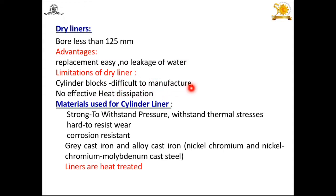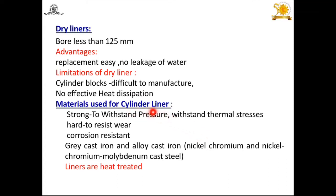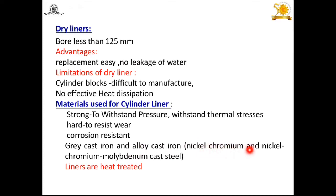The material used for cylinder liners must withstand high pressure and thermal stresses due to the high temperatures inside the cylinder. It must be hard to resist wear and have corrosion resistance. Generally, gray cast iron and alloy cast iron — alloyed with nickel, chromium, or nickel-chromium-molybdenum — are preferred materials for cylinders and cylinder liners, and the liners are heat treated.